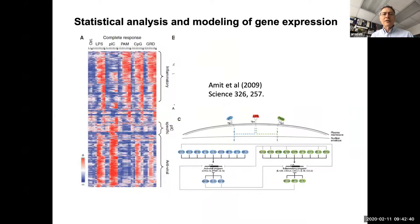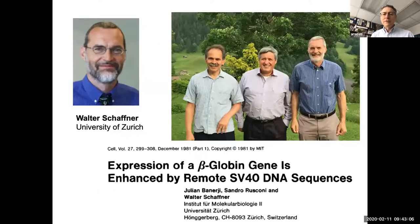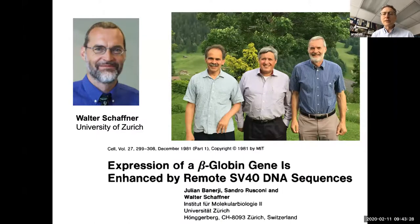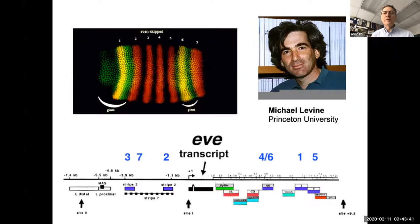We're looking at a network connecting expression of transcription factors early in the Drosophila embryo. Those of you who are specialists might recognize incoherent feedforward designs, which Uri Alon first described in gene regulatory networks in bacteria — so there are aspects of GRNs that seem universally conserved. Most data on gene regulatory networks now comes from omics-level analyses, and most analysis uses statistical approaches where lots of data can be crunched at the same time.